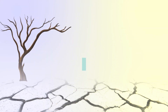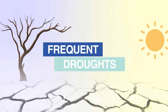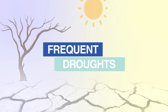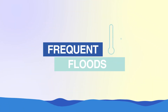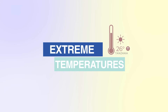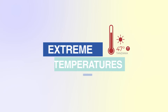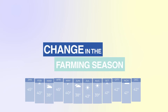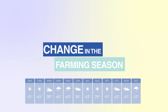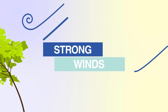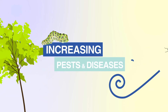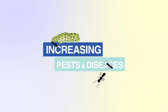Negative impacts of climate change on agriculture include: frequent droughts, frequent floods, extreme temperatures, change in the farming seasons, loss of soil fertility, strong winds, and an increase in pests and diseases.